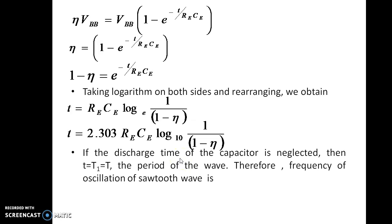If the discharge time of the capacitor is neglected, this is the waveform for which we are trying to find the frequency. This is the charging time and this is the discharging time. The total time period T equals T1 plus T2. This discharging time is very small, so we can neglect T2 and approximate the time period as T equal to T1. If the discharge time is neglected, then T equals T1 which equals the total time period of the wave.